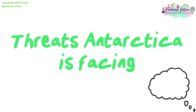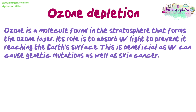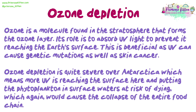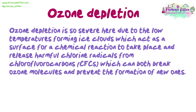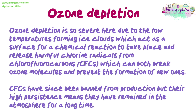Threats Antarctica is facing. Ozone depletion: ozone is a molecule found in the stratosphere that forms the ozone layer. Its role is to absorb UV light to prevent it reaching the Earth's surface, which is beneficial as UV can cause genetic mutations as well as skin cancer. Ozone depletion is quite severe over Antarctica, which means more UV is reaching the surface and putting the phytoplankton in surface waters at risk of dying, which could cause the collapse of the entire food chain. This is due to the low temperatures forming ice clouds, which act as a surface for a chemical reaction to release harmful chlorine radicals from chlorofluorocarbons (CFCs), which can both break ozone molecules and prevent the formation of new ones. CFCs have been banned from production, but their high persistence means they have remained in the atmosphere for a long time.